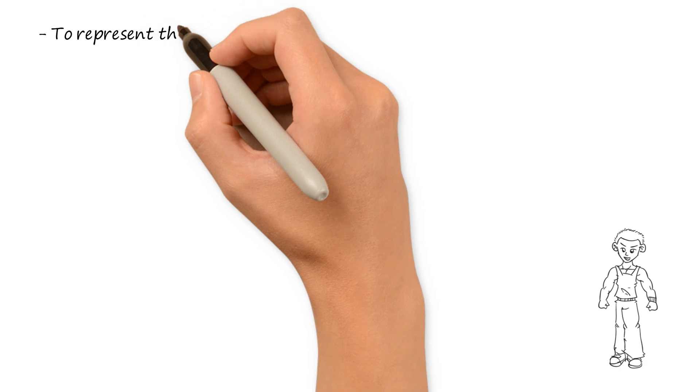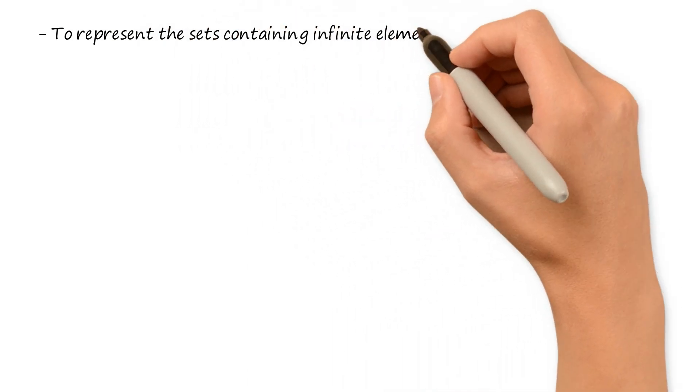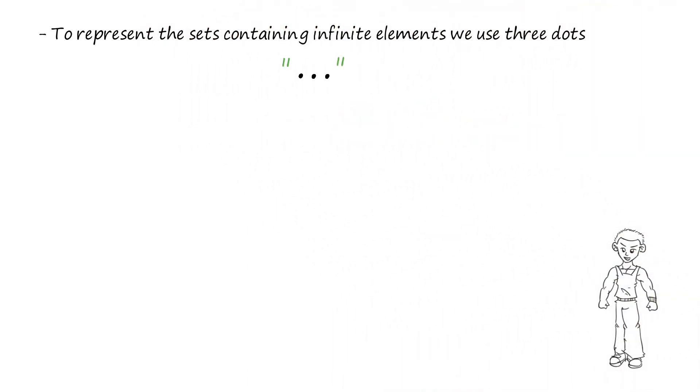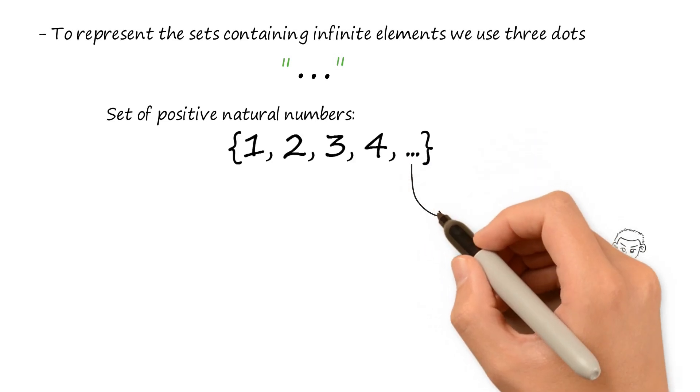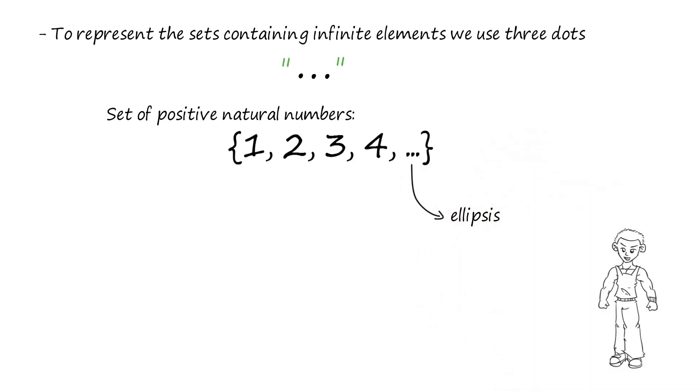To represent the sets containing infinite elements, we use three dots. For example, the set of positive natural numbers, which contain infinite elements starting from 1, can be represented in this manner. The three dots are called an ellipsis and mean continue on. In the same way, we can represent the set of all integers, which range from minus infinity to plus infinity.